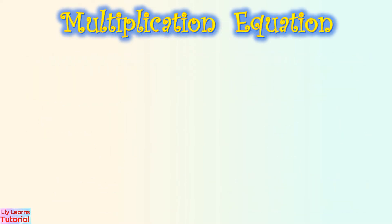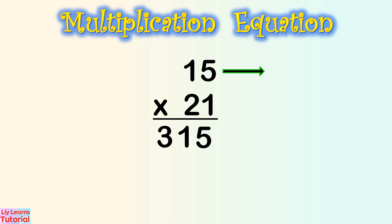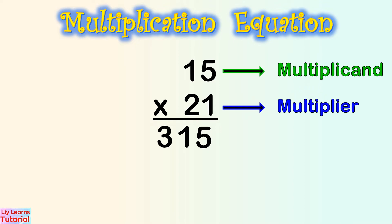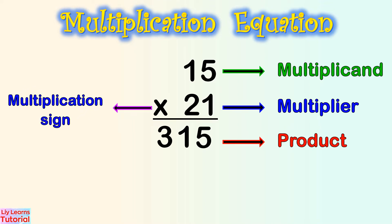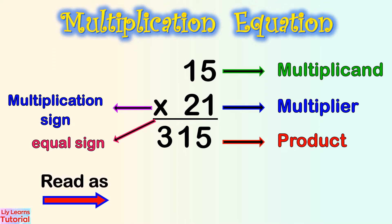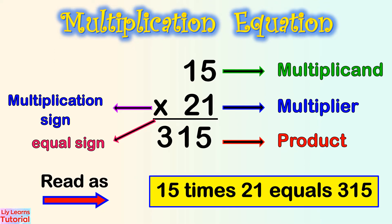We rewrite 15 times 21 in a column form. 15 is the multiplicand. 21 is the multiplier. 315 is the product. This is the multiplication sign, and this is the equal sign. We can read this as 15 times 21 equals 315.